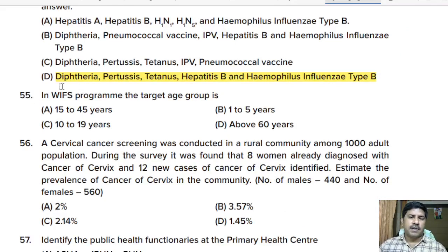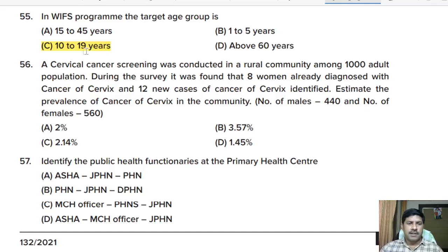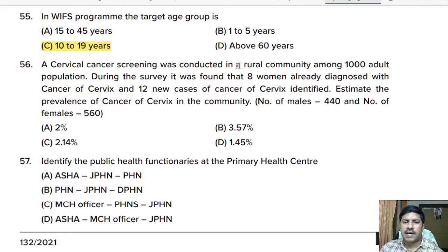Fifty-fifth question: the WIFS program target age group for iron folic acid supplementation is — 15 to 45 years, 1 to 5 years, 10 to 19 years, or above 60 years? Correct answer: 10 to 19 years.